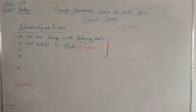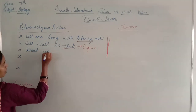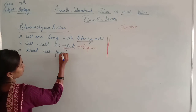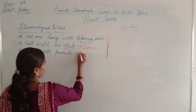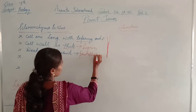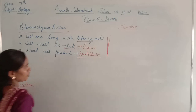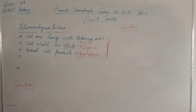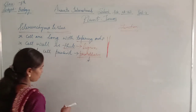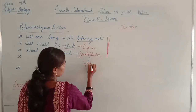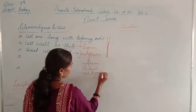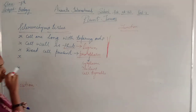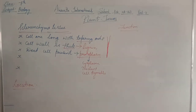In sclerenchyma, dead cells are present. The protoplasm is absent in sclerenchyma tissue. Protoplasm is the living substance present in cells, which includes the cytoplasm, nucleus, and cell organelles. But in sclerenchyma, the protoplasm itself is absent, which is why the cells present in sclerenchyma are dead cells.